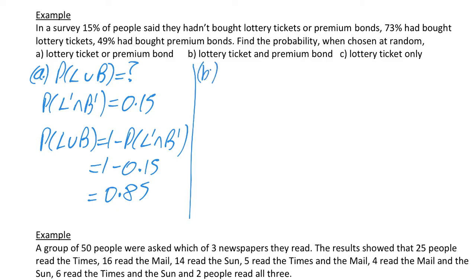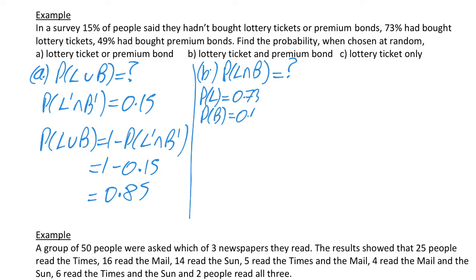For part B, it asks us to find the probability of a lottery ticket and a premium bond — that's the intersection. We need to set this up. What we have: probability of a lottery ticket is 0.73, probability of a premium bond is 0.49, and we've just worked out that the probability of L union B is 0.85, so we'll use the formula.